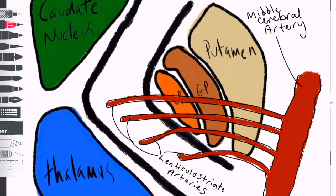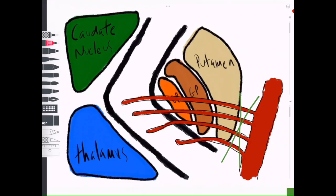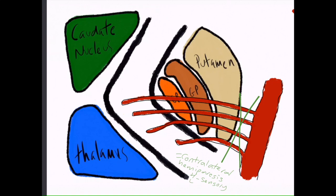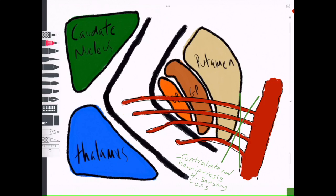The most common type of MCA stroke is called the lacunar stroke, which affects only small lenticulostriate arteries and is commonly caused by hypertension. Damage to the basal ganglia and internal capsule causes contralateral hemiparesis, and contralateral sensory loss may also be present.